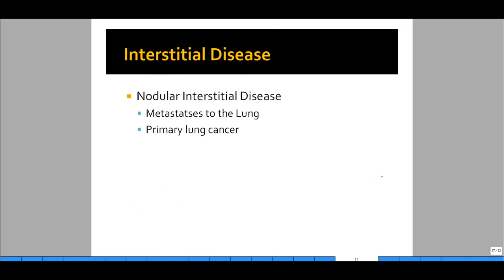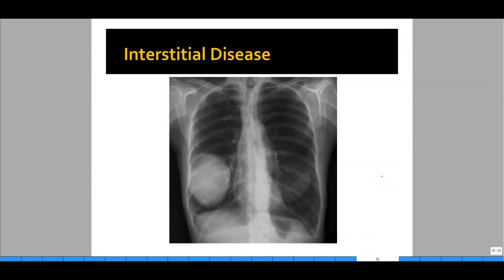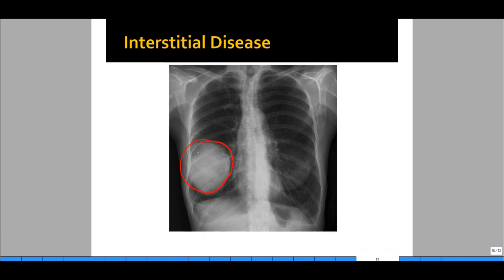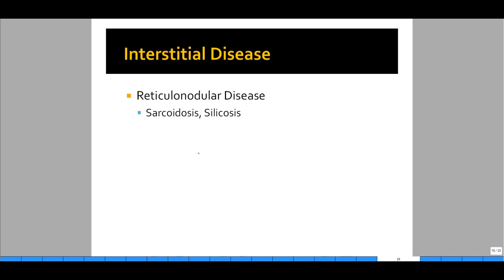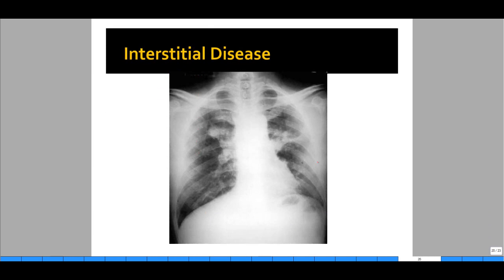Next, nodular interstitial disease — usually represented by metastases to the lung or primary lung cancer. It is very easy to identify: you can clearly see a large mass in the right lung representing a likely metastasis. Cavitary lesions can also cause these same findings. Reticular-nodular interstitial diseases tend to be caused by sarcoidosis and silicosis. These generally start off nodular and then, as they progress, become more reticular in appearance — sarcoid nodular areas are present with mediastinal lymph nodes, and then reticular appearance develops as the remaining lung tissue becomes fibrosed with collagen.